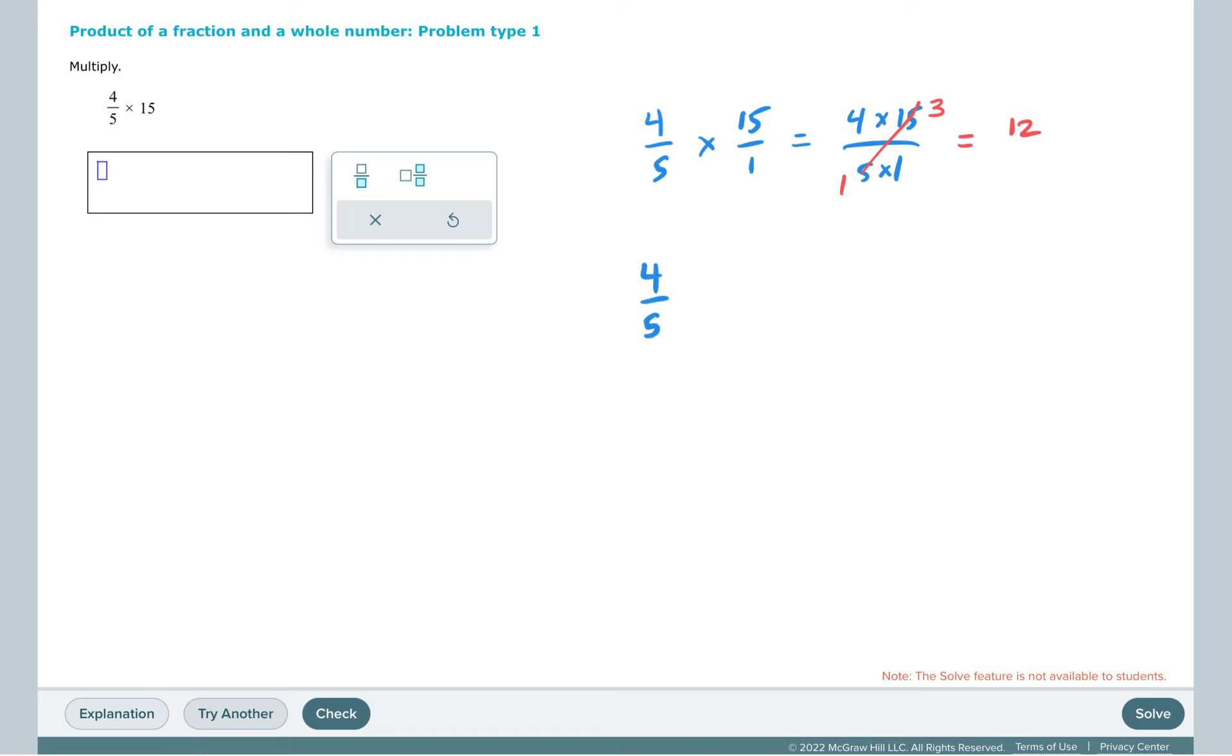We can also think of this as 4 fifths of 15. 1 fifth of 15 is 3, so 4 fifths would be 4 times 3, which is 12.